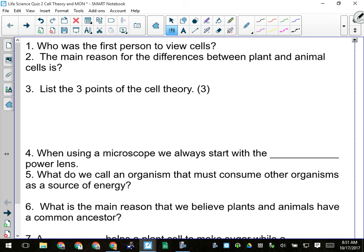Who's the first person to view cells? Hooke, one mark. The main reason for the differences between plant and animal cells is three words: modes of nutrition.